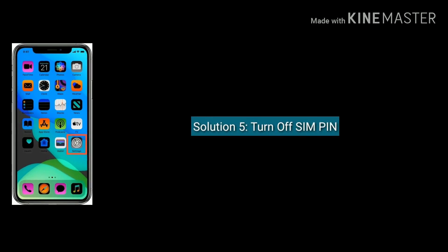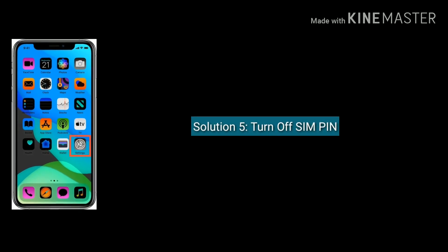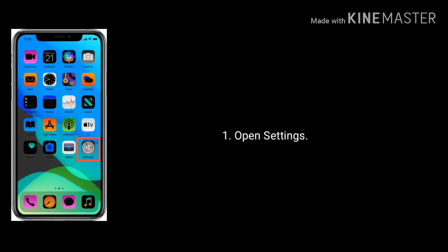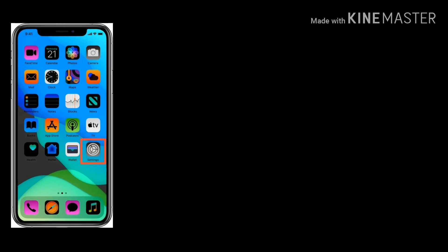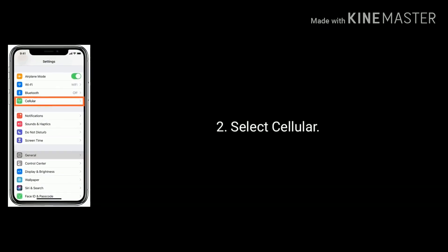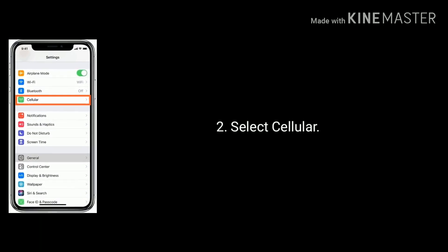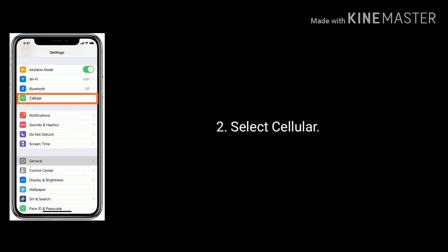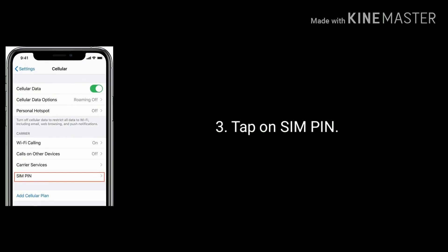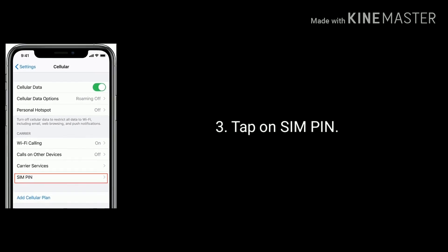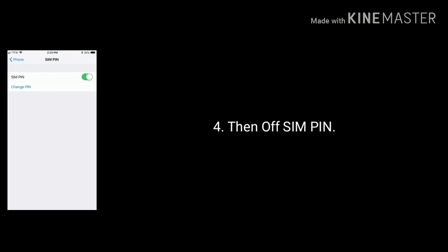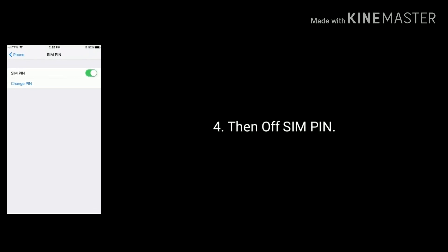Solution 5 is turn off SIM PIN. Open Settings, find and tap on Cellular or Mobile Data, then tap on SIM PIN. Turn off SIM PIN if it is turned on.